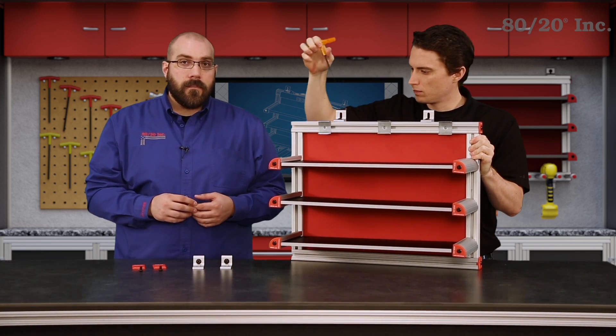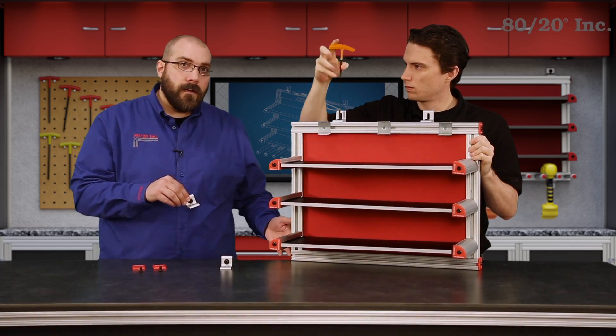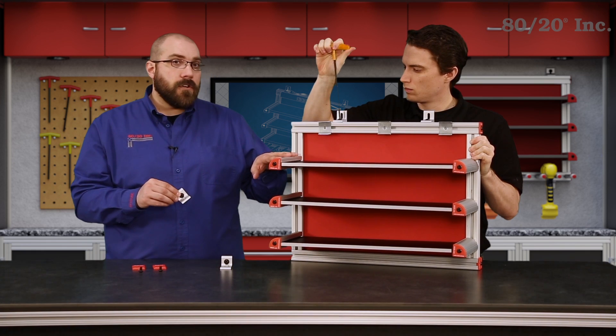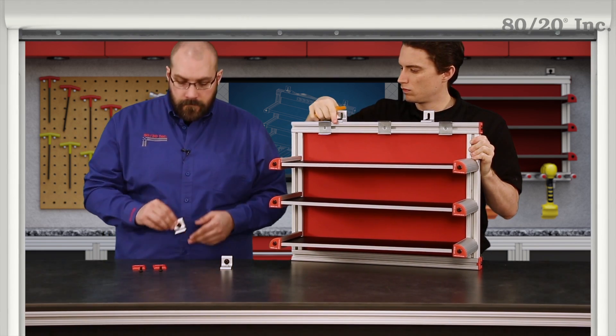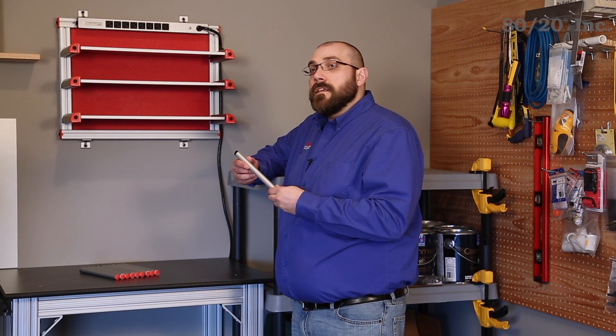We're then going to finish this up by adding some brackets to the top and bottom profiles. These will be used to mount our charging station to the wall. As you can see, we have our charging station mounted to our wall and we're ready to add on our final component, these connector rods.